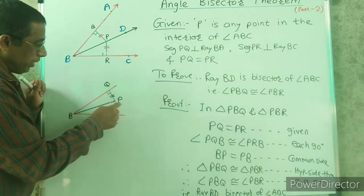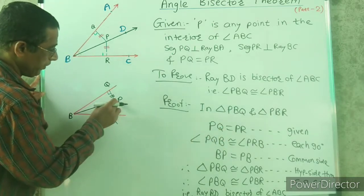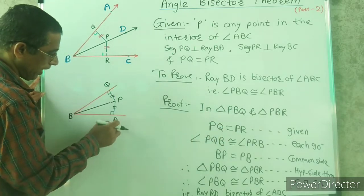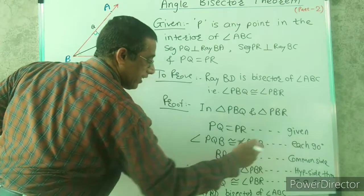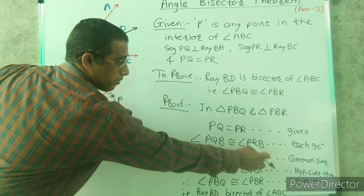PQ equal to PR, this is given. Angle PQB and angle PRB each 90 degrees, and this is common side BP. So these two triangles are congruent by hypotenuse side theorem.